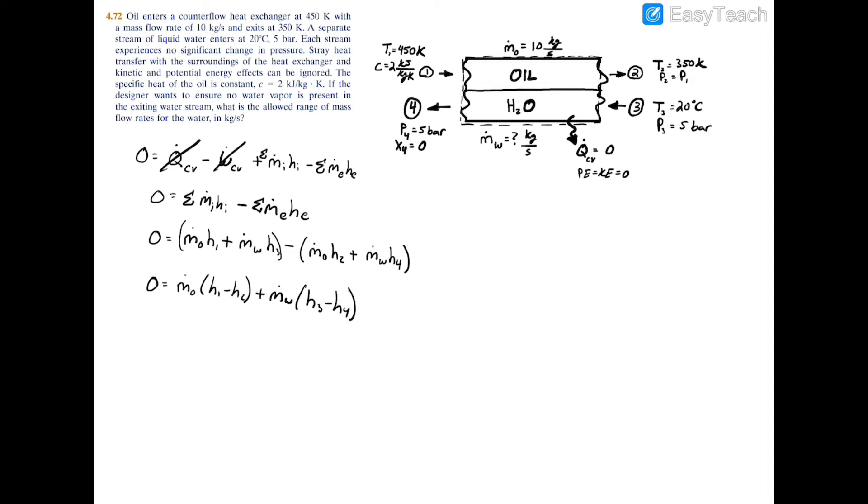This is essentially just the distributive property from the equation above. Now the next thing I'm going to do is solve for m dot w for the mass flow rate of the water, and you're going to have m dot w equals m dot o times h1 minus h2 divided by h4 minus h3.